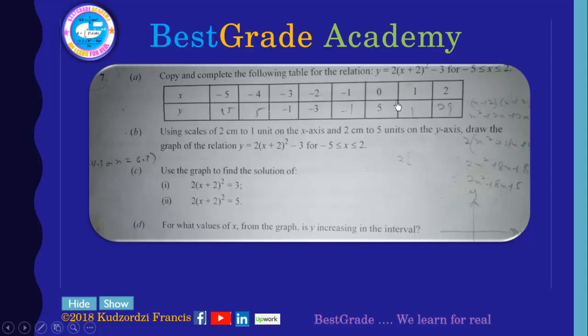This is the table. They're using scales of two centimeters to one unit on the x-axis and two centimeters to five units on the y-axis. Draw the graph of the relation y equals 2 into brackets x plus 2 bracket close all squared minus 3 for the given interval.